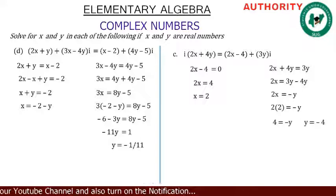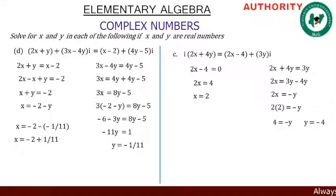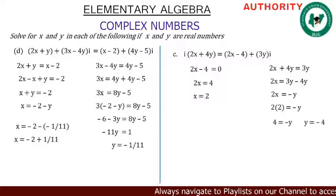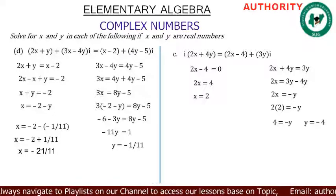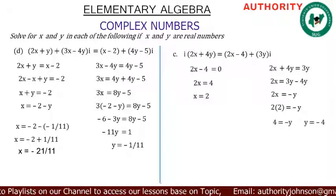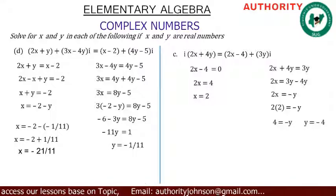Now substituting y equals minus 1 over 11 back into x equals minus 2 minus y: x equals minus 2 minus (minus 1 over 11) equals minus 2 plus 1 over 11. This gives x equals minus 21 over 11. Therefore, for part d, x equals minus 21 over 11 and y equals minus 1 over 11.